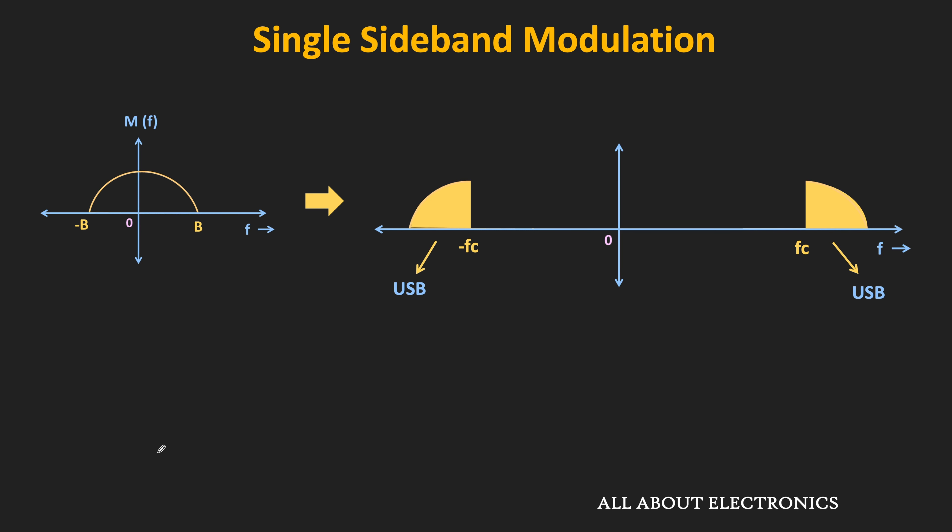In other words, using the same power, we can transmit more useful power in single sideband modulation. So these are the key advantages of single sideband modulation.